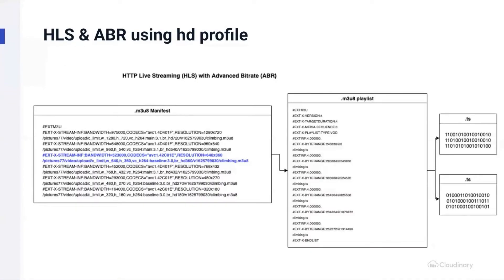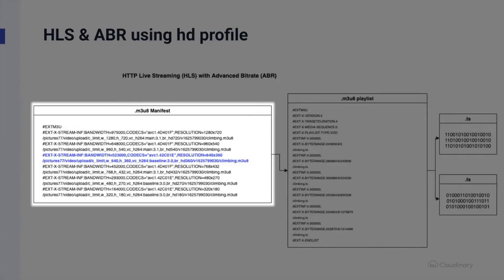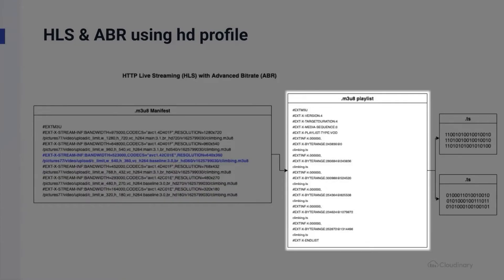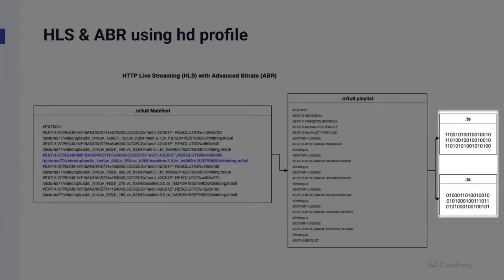If we look inside of HLS and ABR, we can take a look at the files that allow playback. We'll start with the M3U8 manifest file. You'll notice that each resolution listed inside the file corresponds to a specific streaming profile that we've created. Those resolutions each contain their own M3U8 playlist, and inside of that playlist we have the individual binary representations, or chunks, that make up our file.